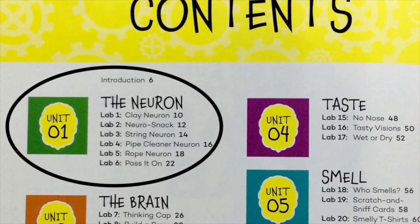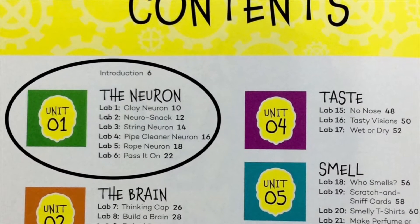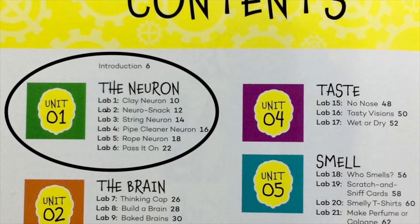It has some great learning activities you can do with stuff around the house. In this video we will learn about neurons and do lab one. For this lab all you will need is four different colored play-dohs.